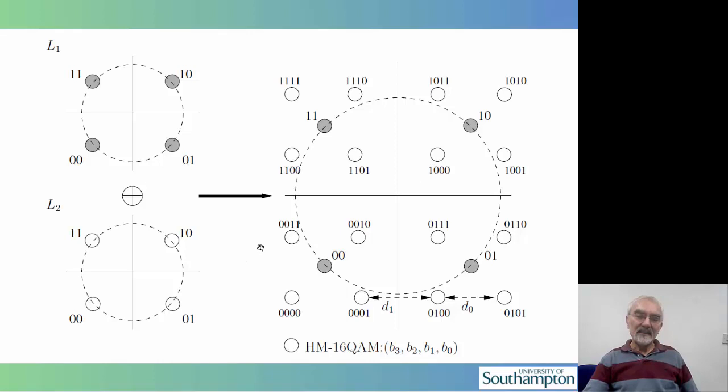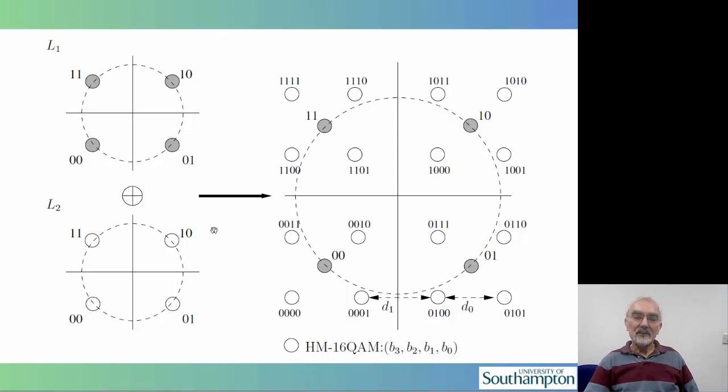The basic philosophy of hierarchical modulation is that 16QAM is constituted by two different layers: a so-called base layer as well as an enhancement layer. In order for this to work in the context of high-definition and standard-definition TV, we would need video codecs capable of generating a base layer which is absolutely necessary for flawless decoding, whilst the enhancement layers can be dropped, for example in case of network congestion or when they get corrupted.